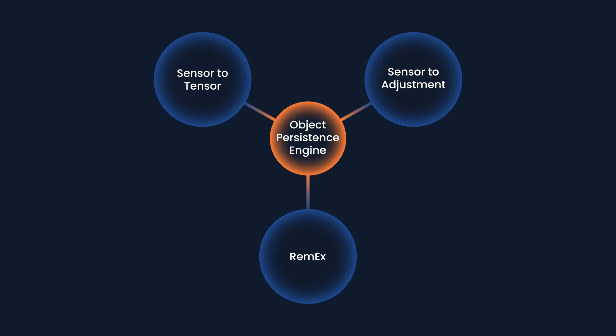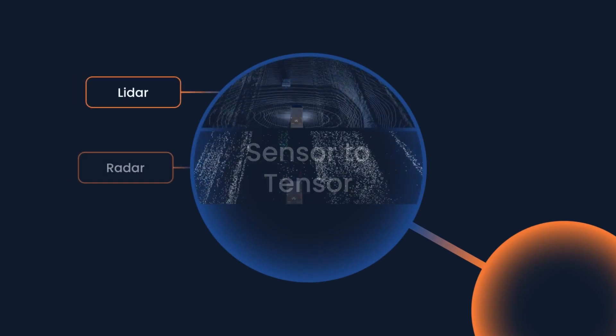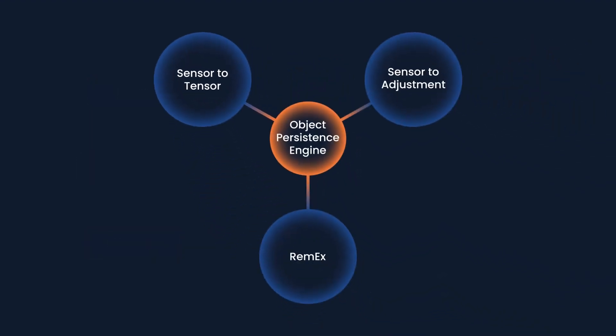Aurora's perception system is powered by three task-specific deep learning modules: Sensor-to-Tensor, which is our detection engine; Sensor-to-Adjustment, which is a recurrent tracker; and Remainder Explainer, which helps explain everything else in the environment that the driver needs to care about. These are combined in an object persistence engine to provide seamless understanding to the driver. Today we're talking about one part of our perception system — Sensor-to-Tensor, our deep learning detection module that uses sensor fusion to learn and infer from multiple sensor modalities, creating a deep understanding of the world around the Aurora driver.